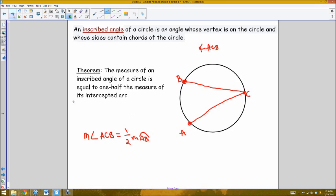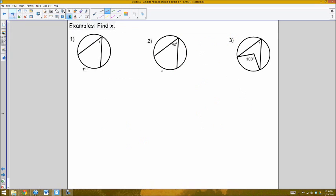This is always true. In the context of some examples, if I know that an intercepted arc is 74 degrees, then the measure of the angle inscribed within that arc would have to be half of 74. So X is one half of 74 degrees, or more simply, X equals 37 degrees.